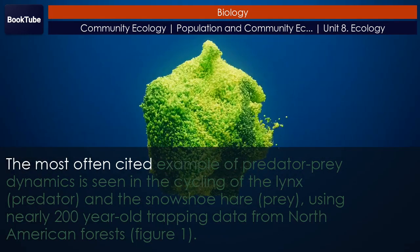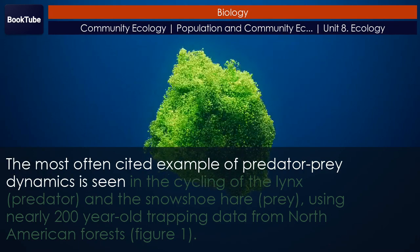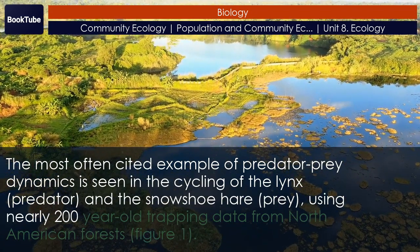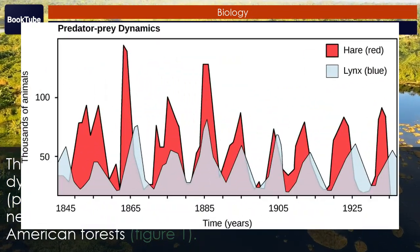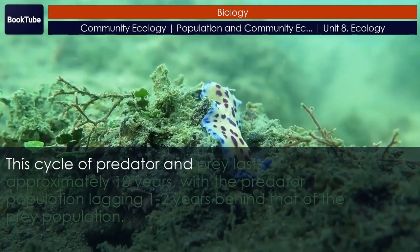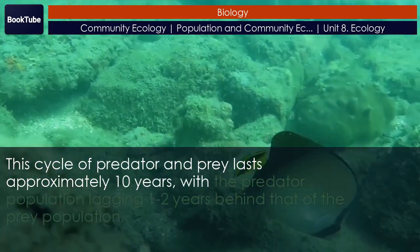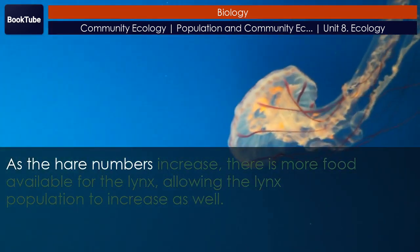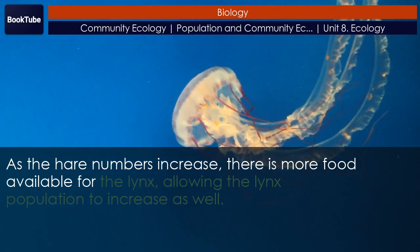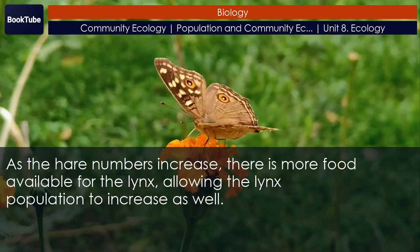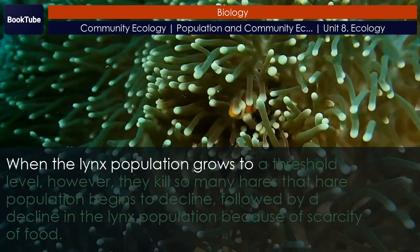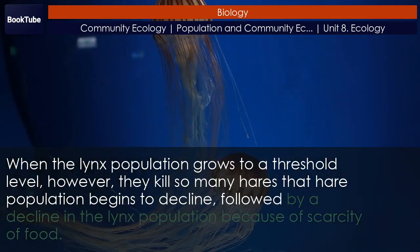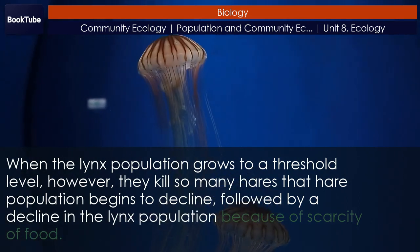The most often cited example of predator-prey dynamics is seen in the cycling of the lynx (predator) and the snowshoe hare (prey), using nearly 200-year-old trapping data from North American forests. This cycle lasts approximately 10 years, with the predator population lagging one to two years behind that of the prey. As hare numbers increase, there is more food available for the lynx, allowing the lynx population to increase as well. When the lynx population grows to a threshold level, they kill so many hares that the hare population begins to decline.